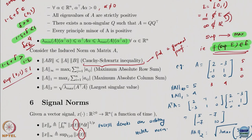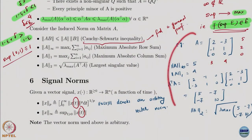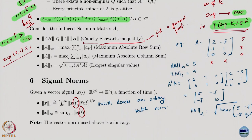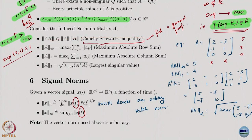Matrix induced norm is also a valid norm. Matrices are also vector spaces — they form a linear normed space. This is evident because superposition works: if you take any two same-dimensional matrices and take a linear combination, it is the same dimension matrix. So matrices also form a vector space, as long as your matrix dimension is fixed. The 1-norm, infinity norm, and 2-norm are rather easy to compute — you just apply the formulae.